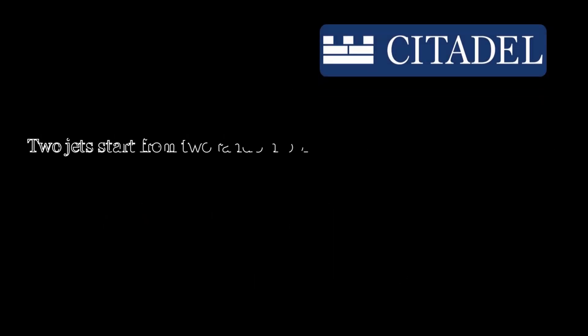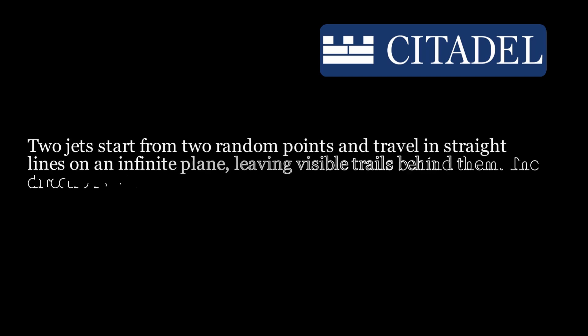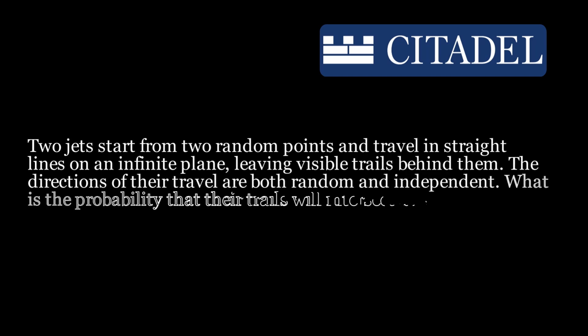Let's look at another problem. Two jets start from two random points and travel in straight lines on an infinite plane, leaving visible trails behind them. The directions of their travels are both random and independent. What is the probability that their trails will intersect at some point? Note that the two jets travel on the same plane. Also, assume that the trails never fade. Try to solve this on your own.